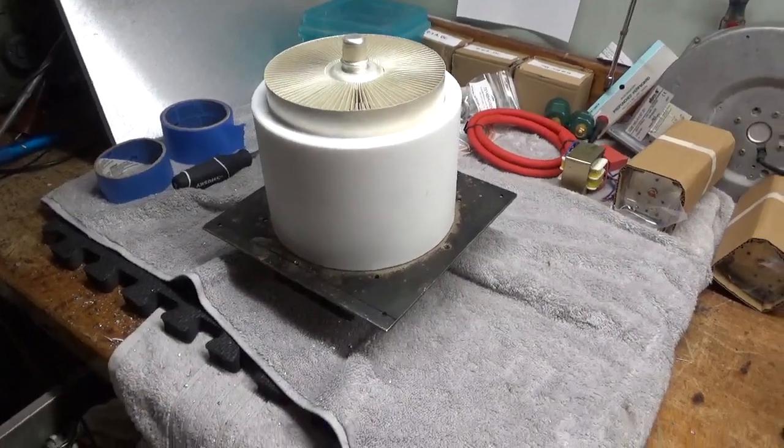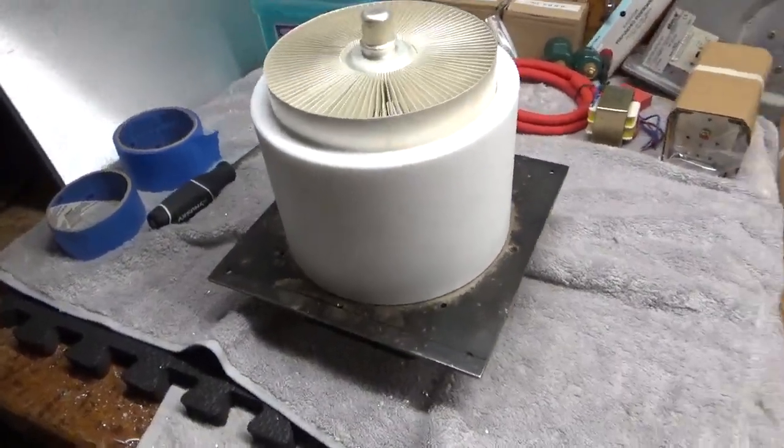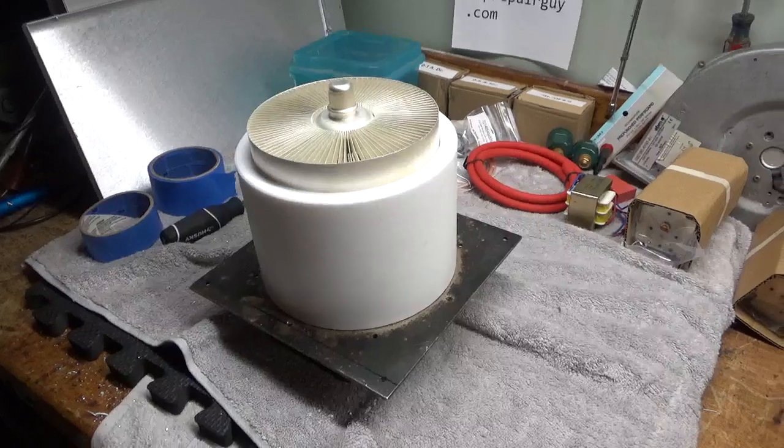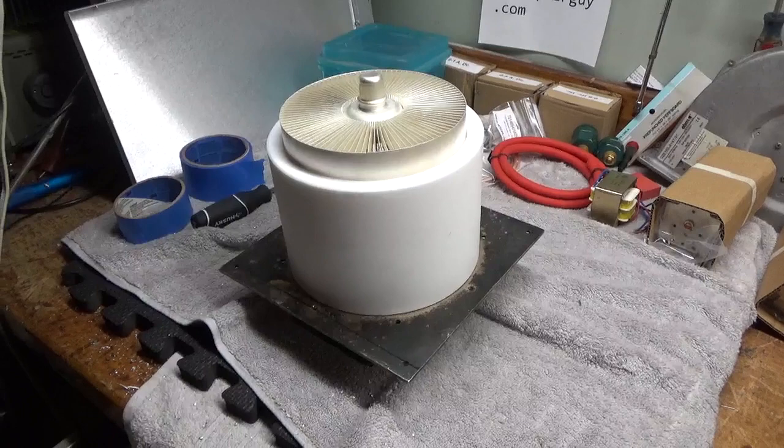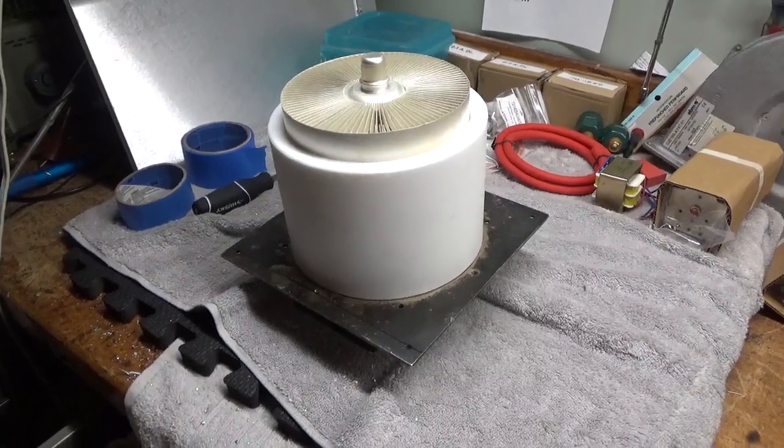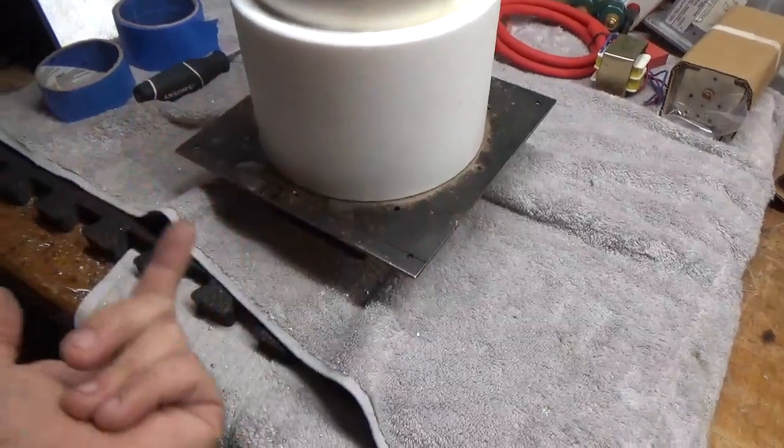We have my other 6000 tube here. This is an Eimac rebuilt tube, never used. Like I said before, he's getting a new Penta. This is one of my two tubes. So I'm going to flip it over. Hold this in place.